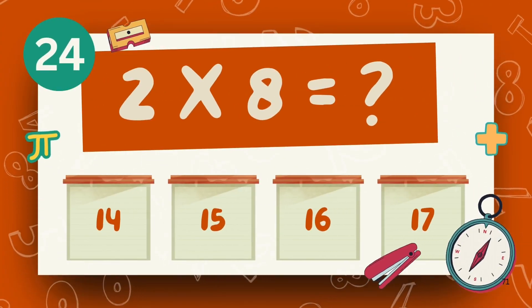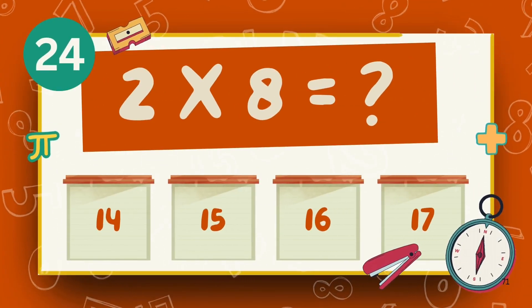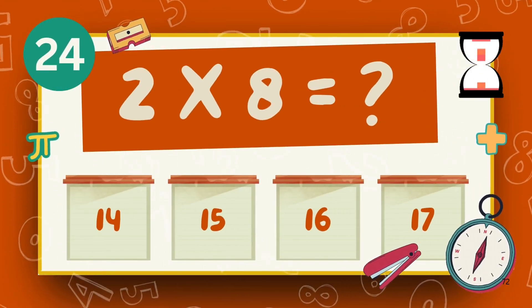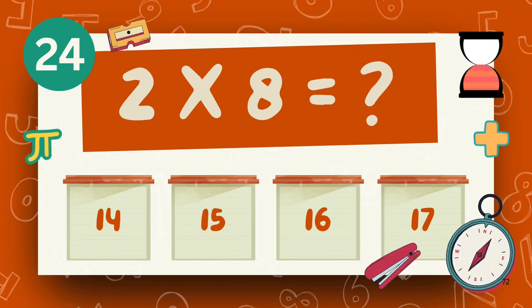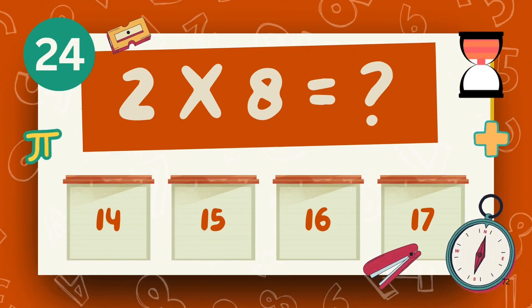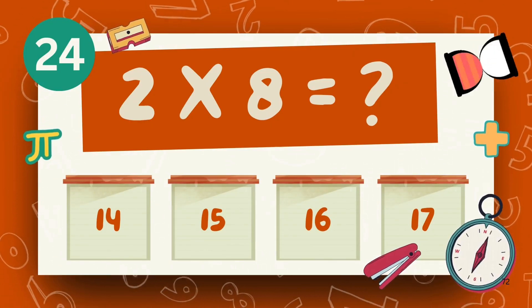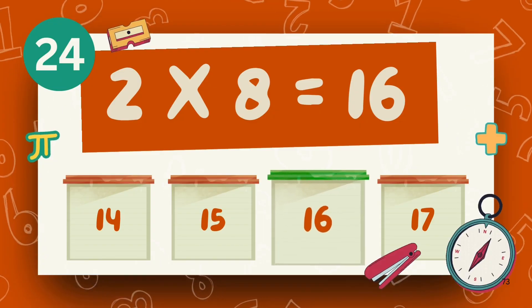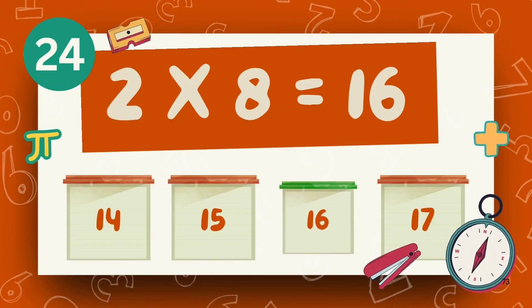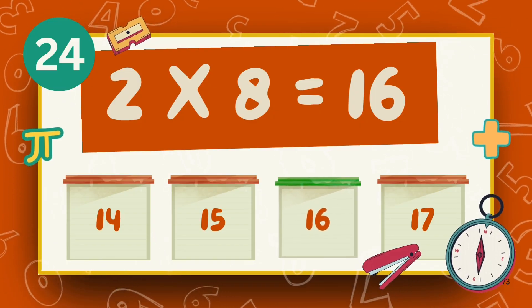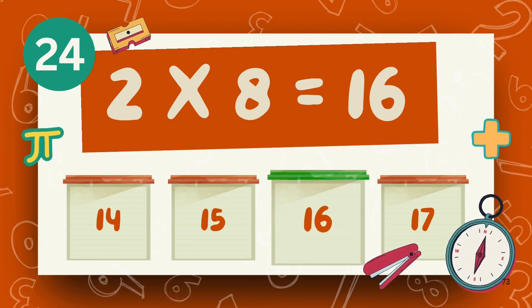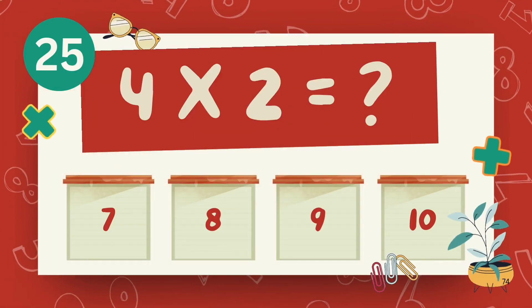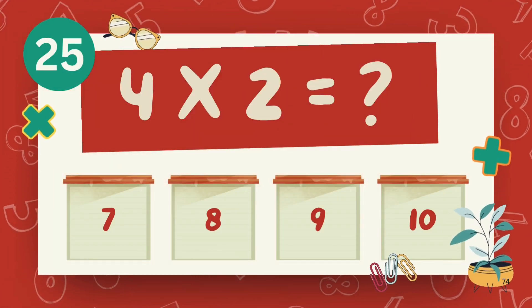What is 2 multiply 8? The answer is 16. What is 4 multiply 2?